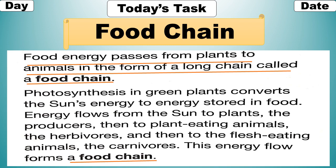Write today's task, day and date at the top of the page. Today our topic is food chain. Food energy passes from plants to animals in the form of a long chain called a food chain. Photosynthesis in green plants converts the sun's energy to energy stored in food.